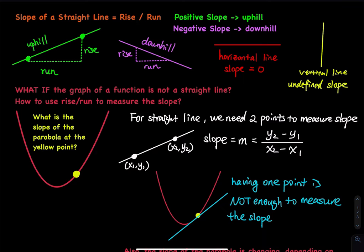I am talking about a parabola. For a parabola, you cannot just take two points and do y2 minus y1 divided by x2 minus x1 to calculate the slope — that is not going to work anymore because the curve is not a straight line. So how do we take care of this case? I have a curve and I want to measure the slope at a point.